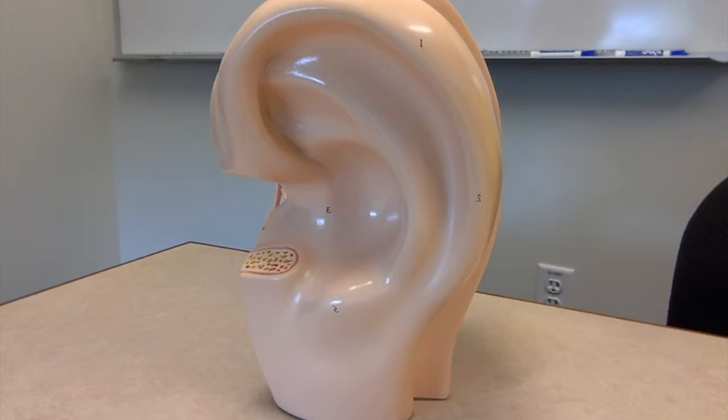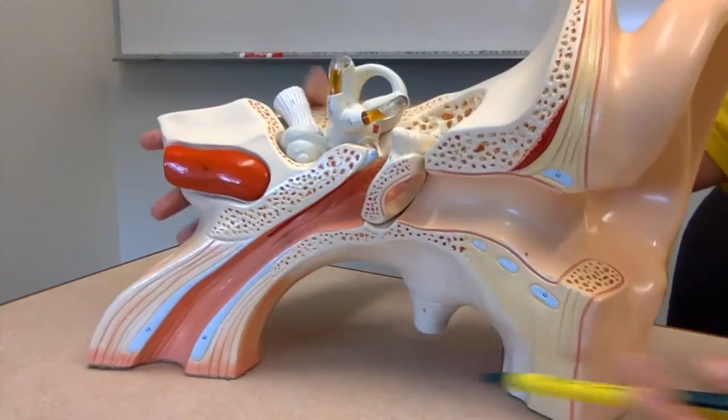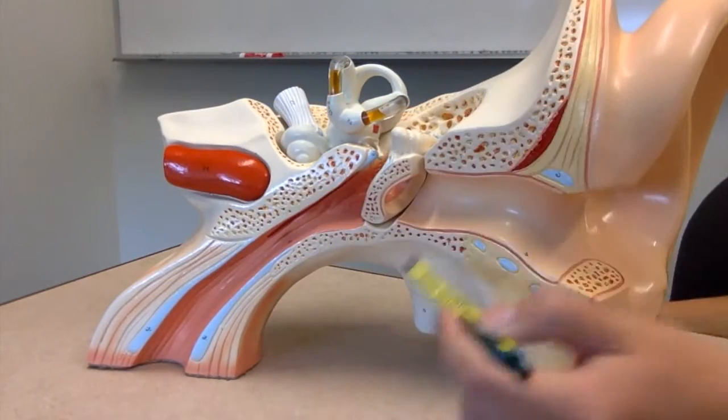The ear is split into three different sections: the inner, the middle, and the outer.